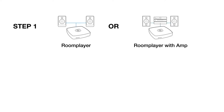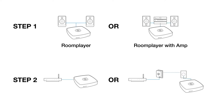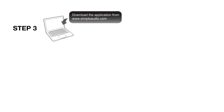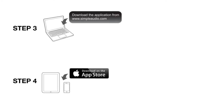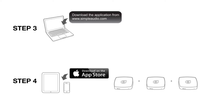First, you connect it to a set of speakers or an audio system. Next, you connect it to your network. Then you download and install the room player app onto your PC to complete the setup. And lastly, you can also install room player controller software onto your iPhone or iPad and add more room players to build a multi-room digital music system.